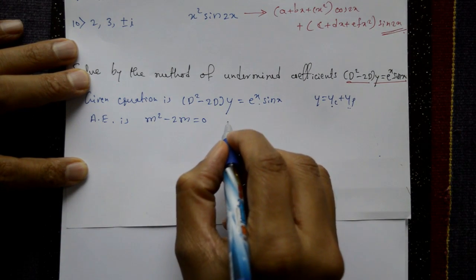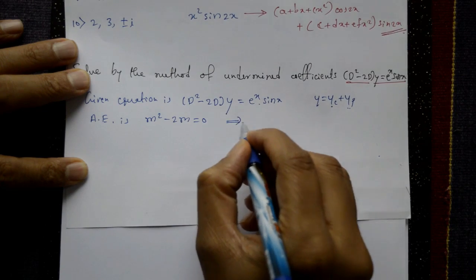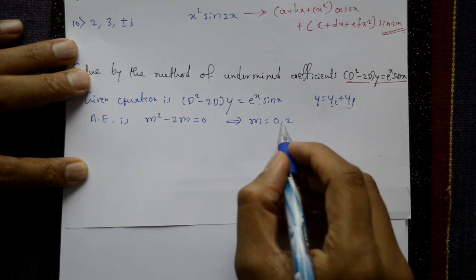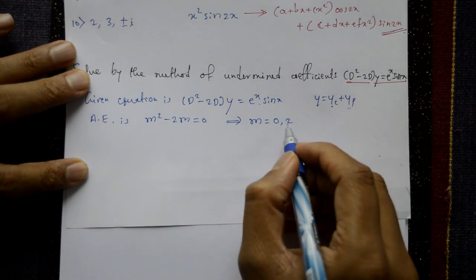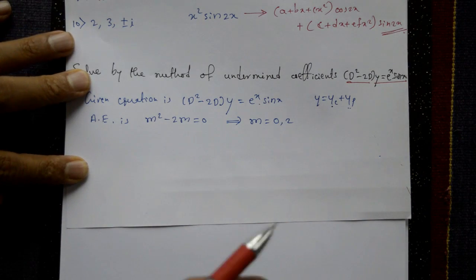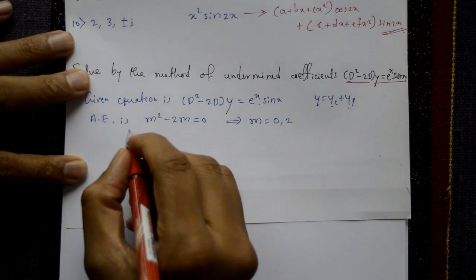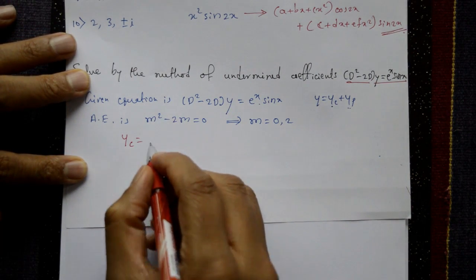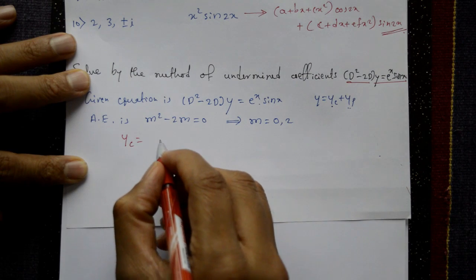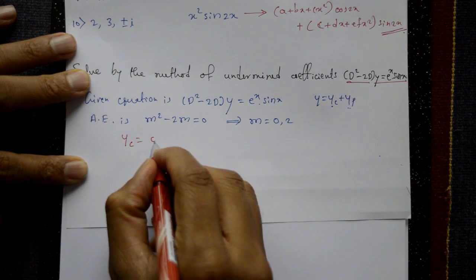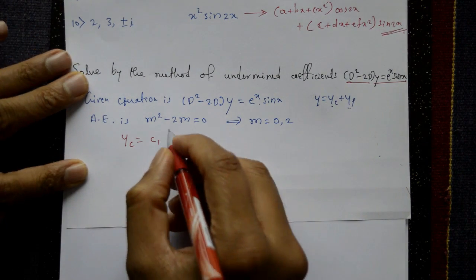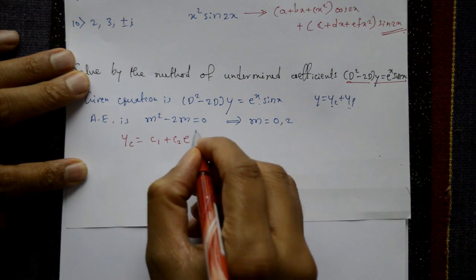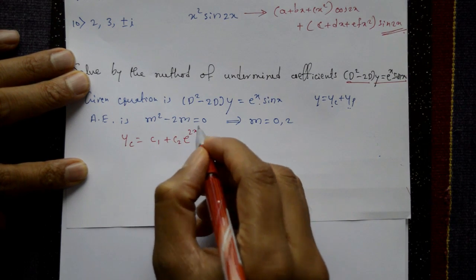The auxiliary equation gives m = 0 and m = 2. The roots are 0 and 2. Now write the complementary function: since the roots are different, yc = c₁e⁰ + c₂e^(2x), which simplifies to yc = c₁ + c₂e^(2x).